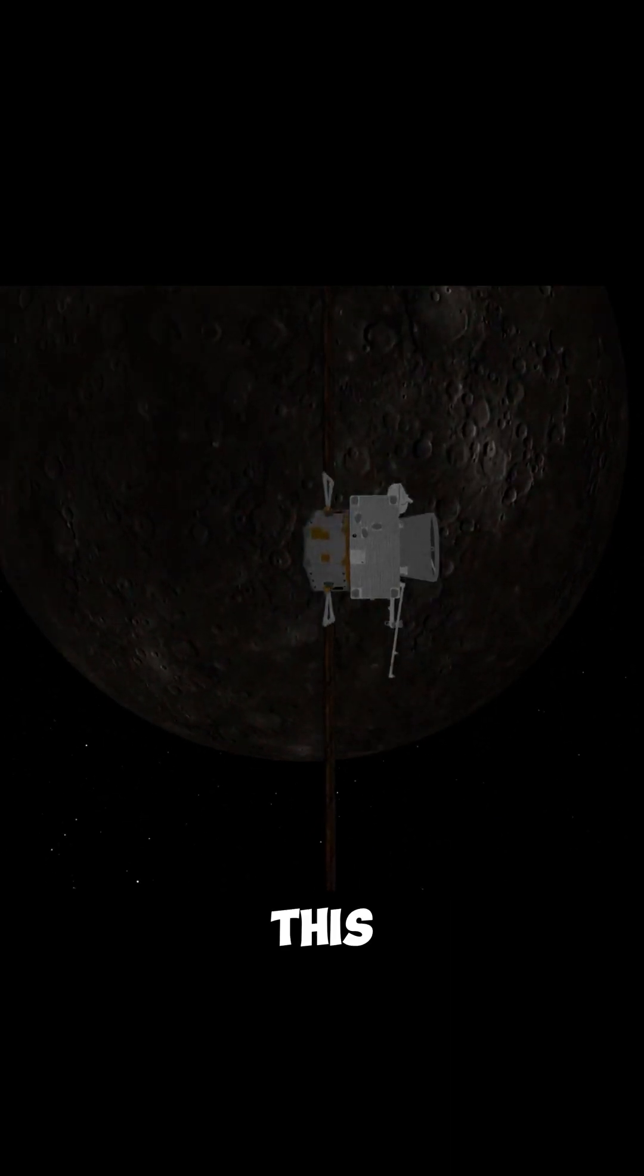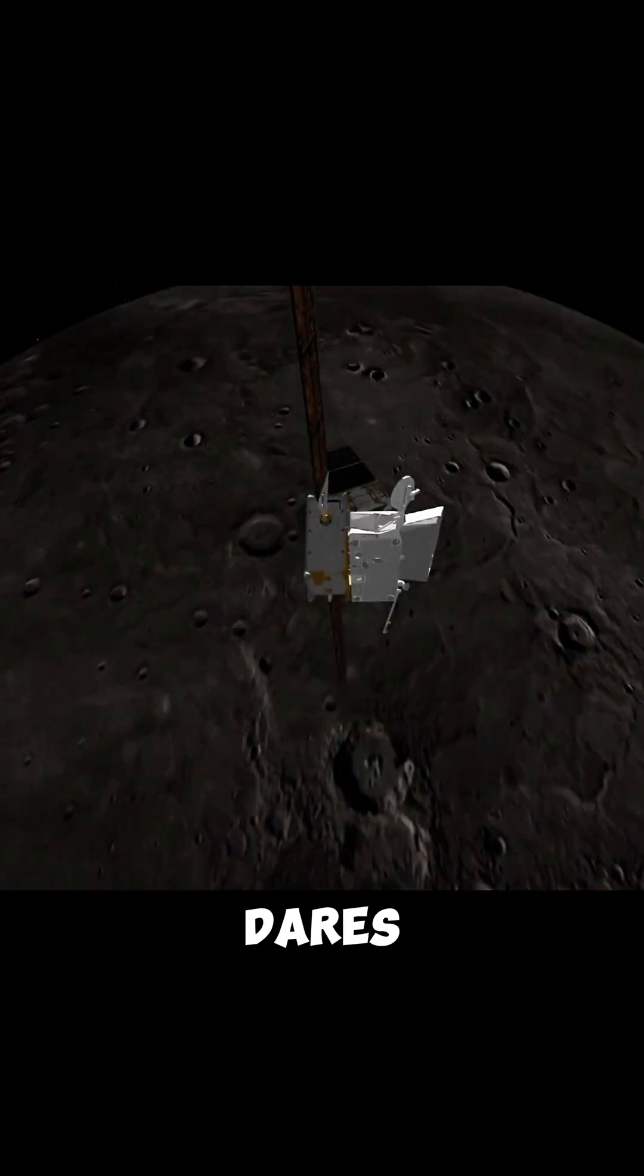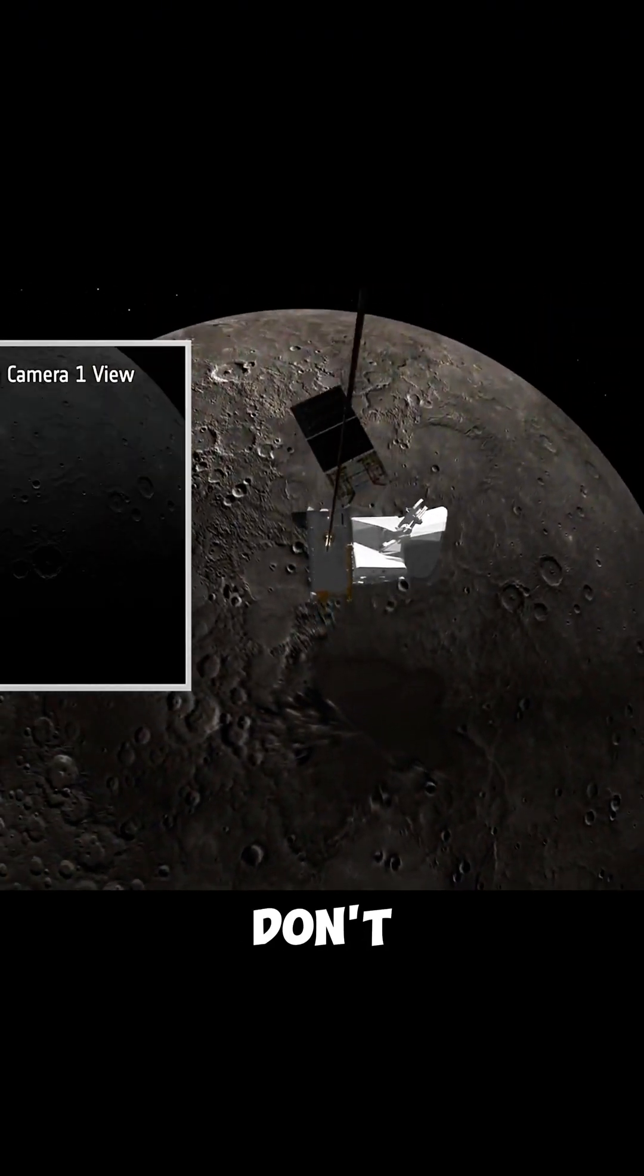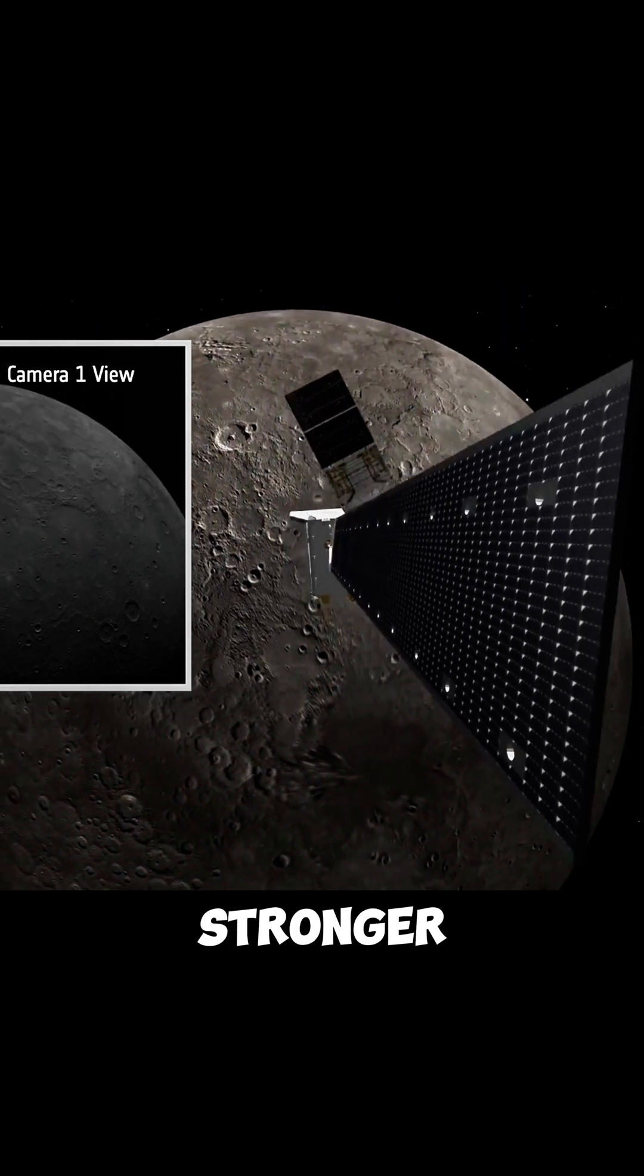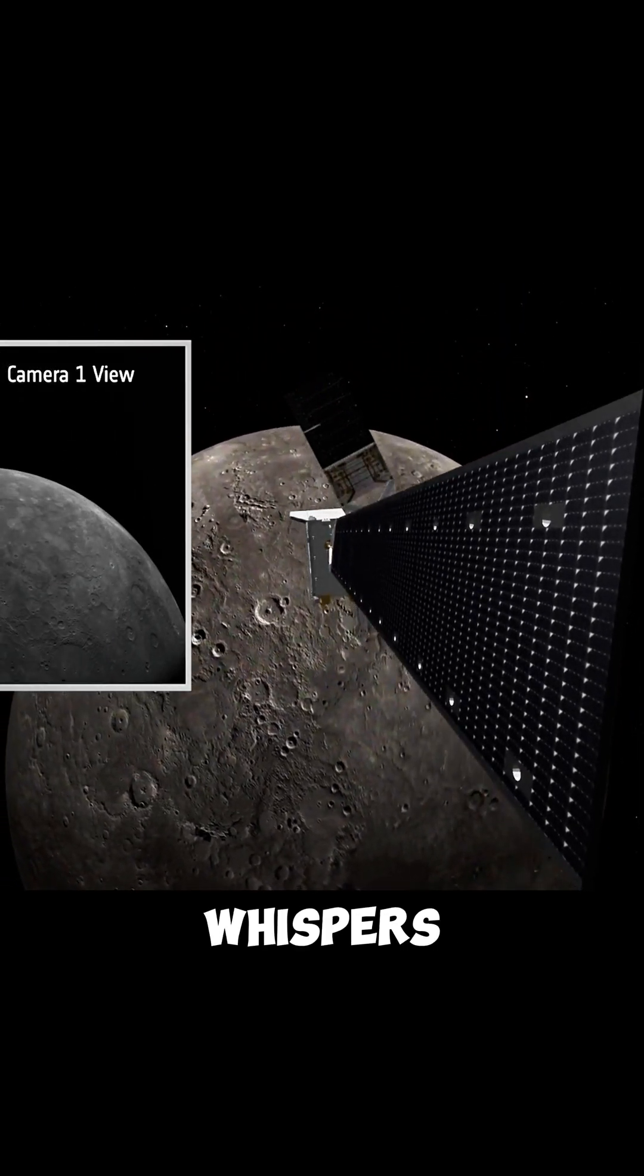Yet BepiColombo, this sleek European-Japanese marvel, dares. Armed with ion thrusters and a heat shield stronger than myth, it's mapping Mercury's magnetic whispers.